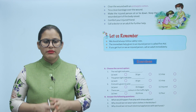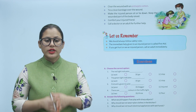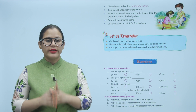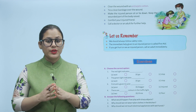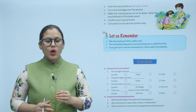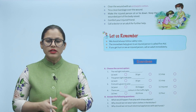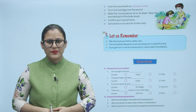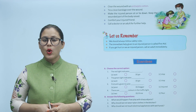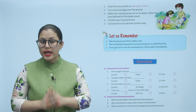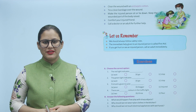Let us remember: we should always follow safety rules. The immediate help given to an injured person is called first aid. If you see an injured person, call an adult immediately. Aapko hamesha hi safety rules follow karna chahiye. Aur agar aapko koi injured person dikhe toh kisi adult ko immediately call karna chahiye. I hope aapko yeh chapter samajh aaya hoga aur aap yeh saare safety rules follow karenge.